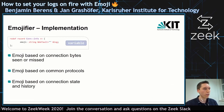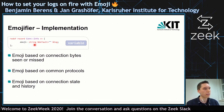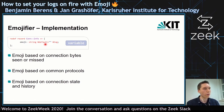Looking at the code, that's quite simple. You can see how we extended the coninfo record with an emoji field of type string, which by default is empty and gets logged to the log file.